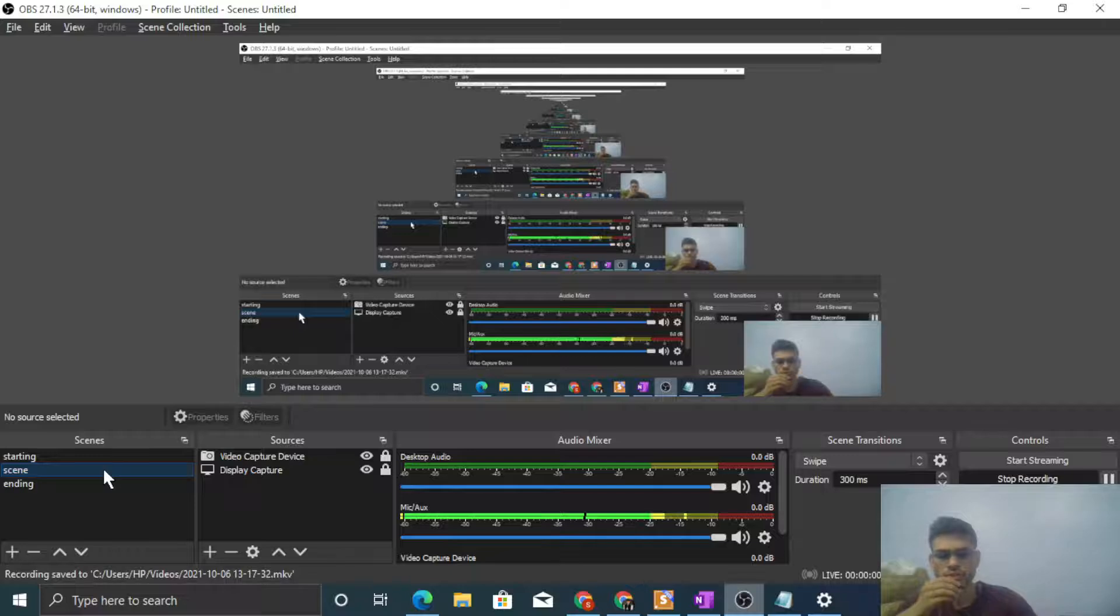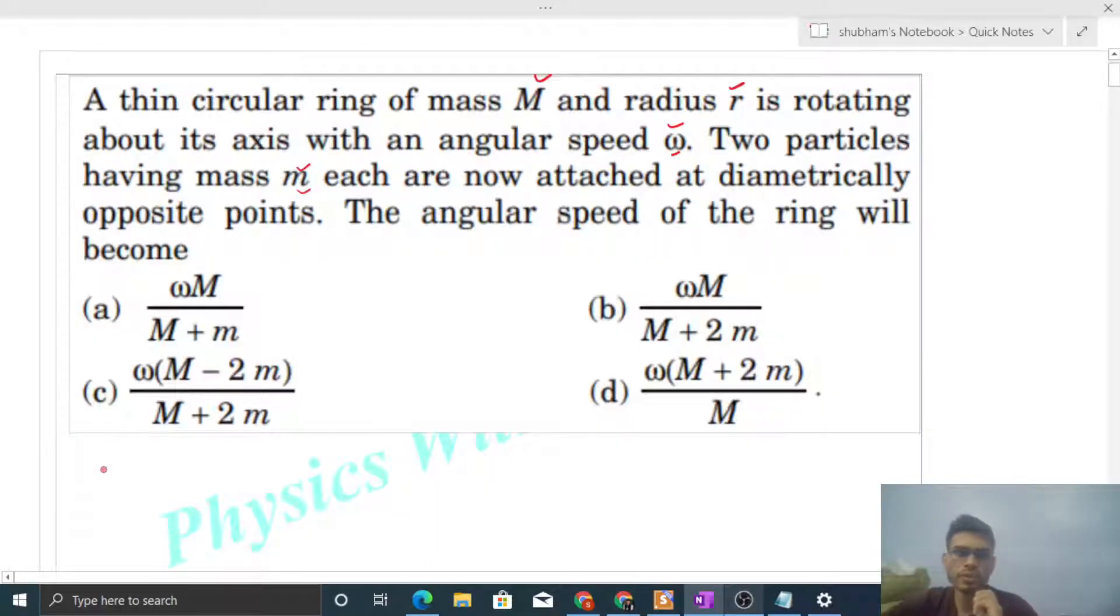Okay hi everyone, so today let's discuss this interesting problem. It says a thin circular ring of mass capital M and radius r is rotating about its axis with an angular speed omega. Two particles having mass small m each are now attached at diametrically opposite points. The angular speed of the ring will become?